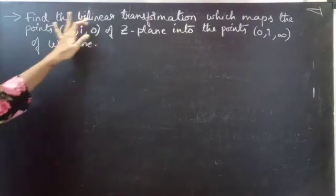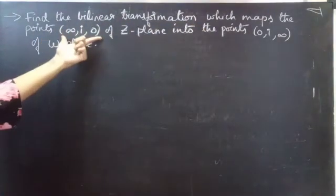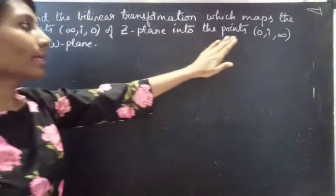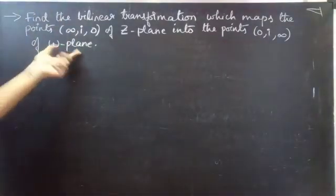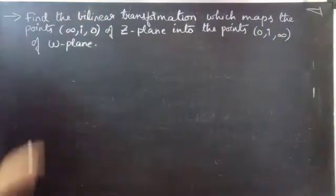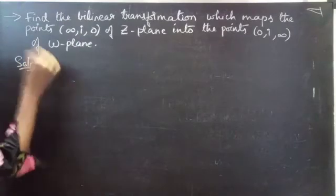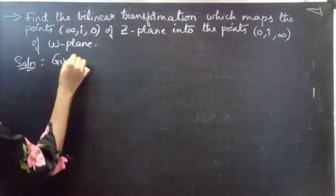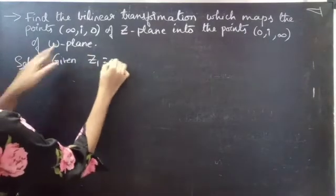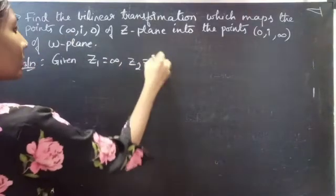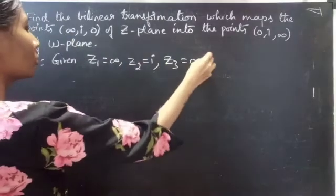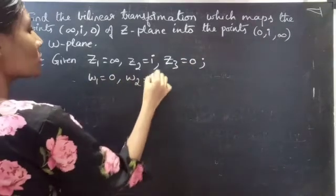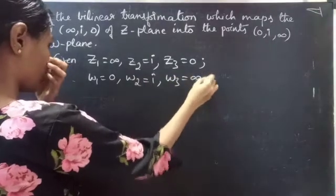Problem: Find the bilinear transformation which maps the points of the Z-plane — having infinity — into the points of the omega plane, where here also you are having infinity. The given points are: Z1 equals infinity, Z2 equals i, Z3 equals 0, and omega1 equals 0, omega2 equals i, omega3 equals infinity.